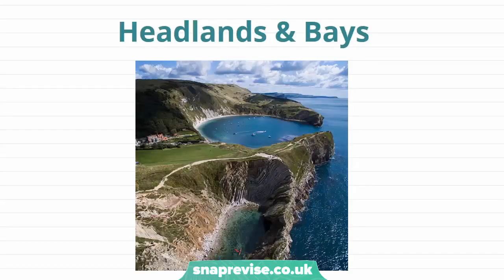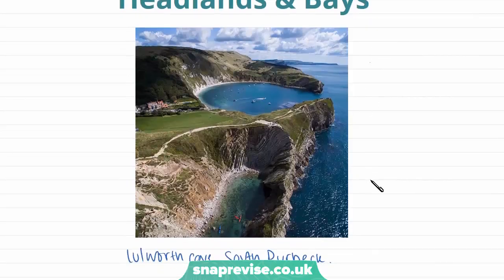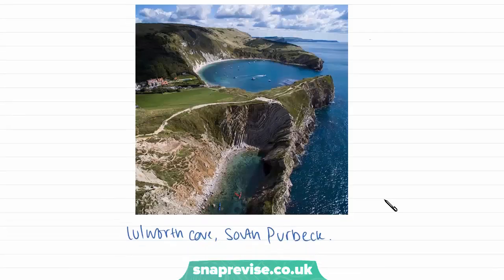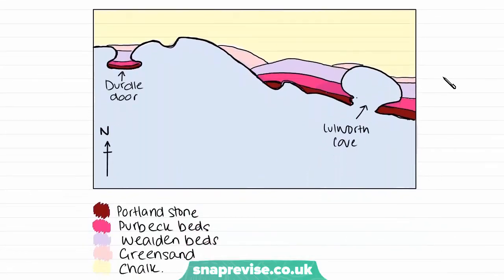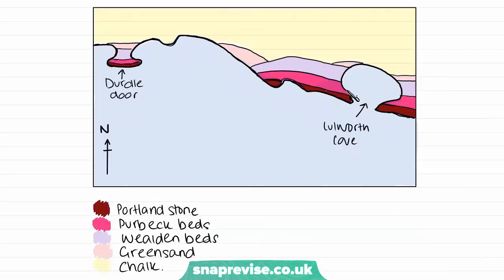The first type of landforms we're going to look at are headlands and bays. This is a photograph of Lulworth Cove in South Purbeck on the Dorset coast. This is a typical bay and it also has an associated headland feature. We're going to look at how these different headlands and bays are formed, as they're very significant features in the coastal landscape. This is a map of the Purbeck area, showing the cove from the photograph and a piece of headland called Dirdaldor, just further up the coast.